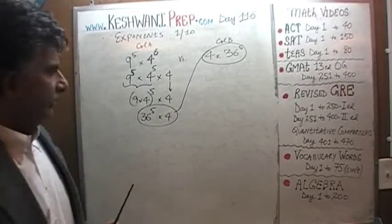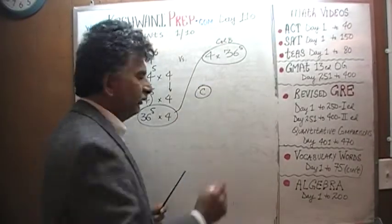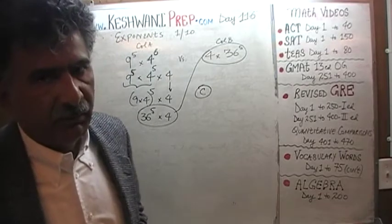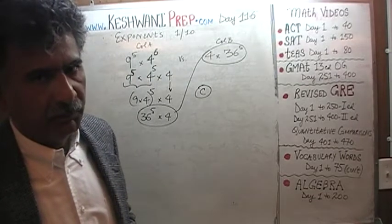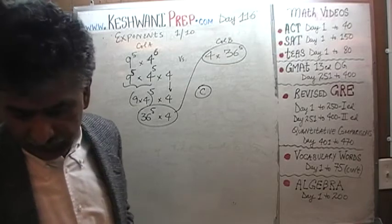So the answer here is C. The question was which column is bigger? The answer is neither column is bigger. They are both equal. The answer is not A or B. The answer is C. They are both equal.